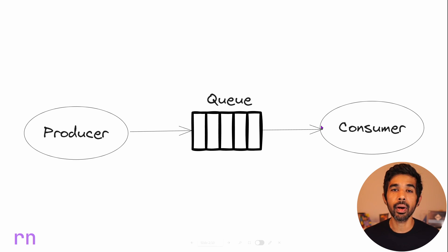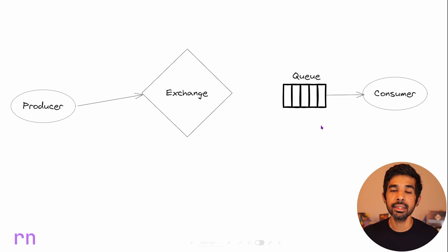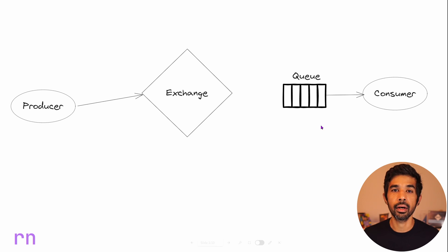However, in RabbitMQ, the producer does not send the message directly to the queue. The producer sends the message to an exchange, and the exchange is responsible for routing these messages to the different queues. So the exchange basically sends copies of these messages to the different queues that are registered with it.